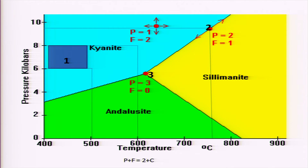So what we see is that the relationship P + F = 2 + C — that is, number of phases plus degree of freedom equals 2 plus number of components — is valid throughout the different positions in this diagram. Learners, this is known as Gibbs phase rule, and it provides us a very powerful tool to examine transformations in metamorphic rocks.